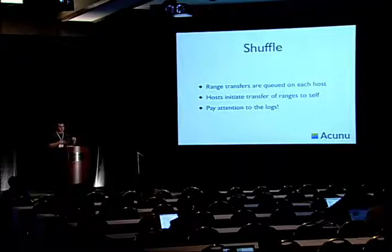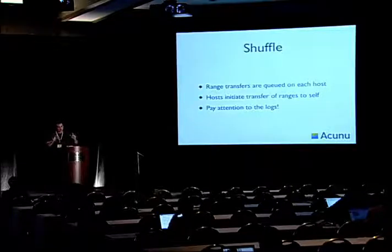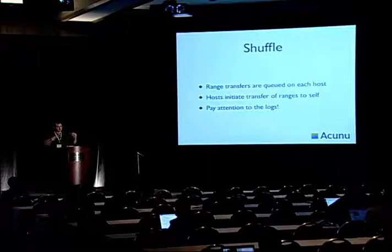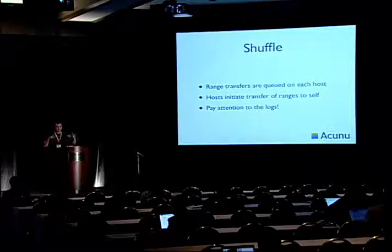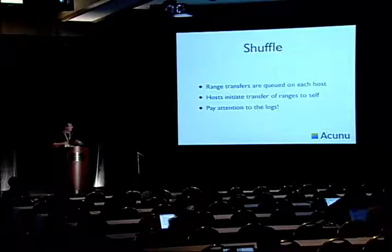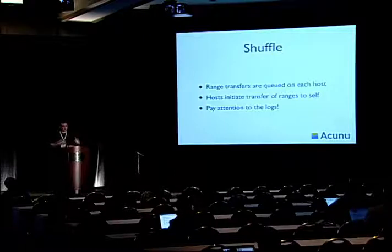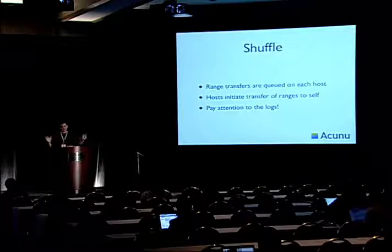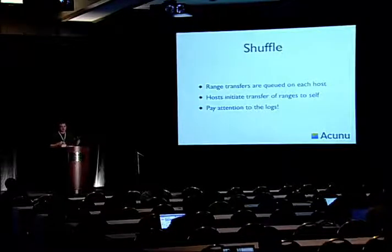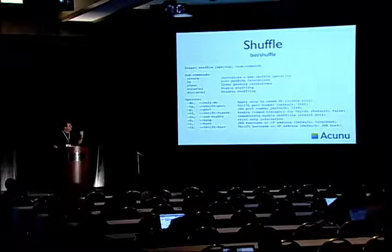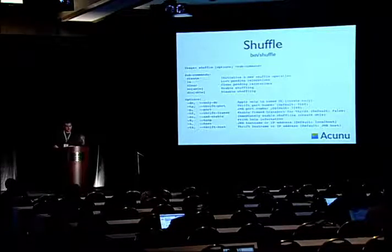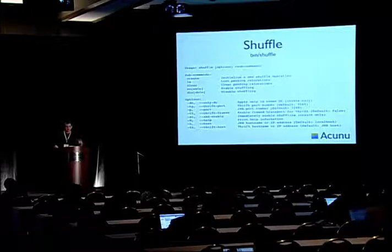The way shuffle works is it calculates a new mapping and queues on each node the ranges that it should transfer. Each node is able to steal a range — we calculate which ranges each node should steal, queue them up on a system table, and then tell it to go. We give it a few breaks so that one node doesn't get too far ahead of the other. If everything goes well, you've completely randomized your placement. Pay attention to the logs and keep an eye on it — you can always pause or stop it if it starts doing something wrong, and if it does, it's probably not irrecoverable. There's a new command called shuffle: you can create a new shuffle operation, start and stop it, list the moves that are going to take place, and limit it to only a single DC at a time.